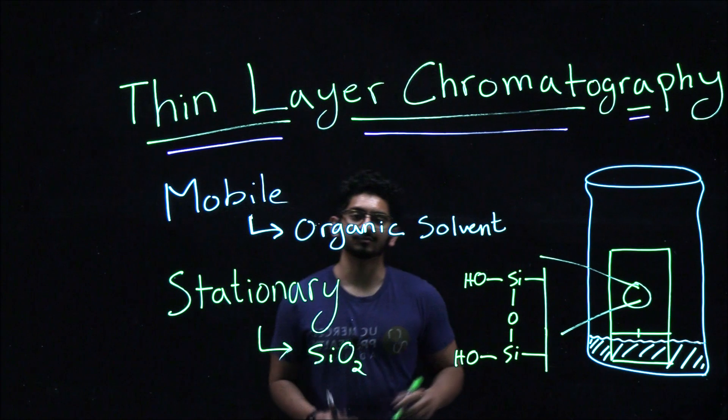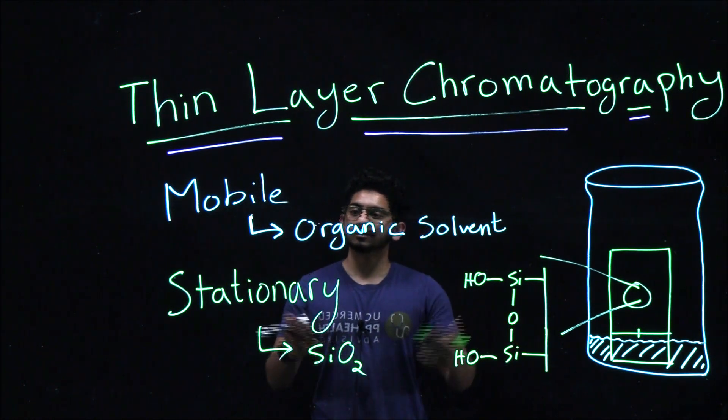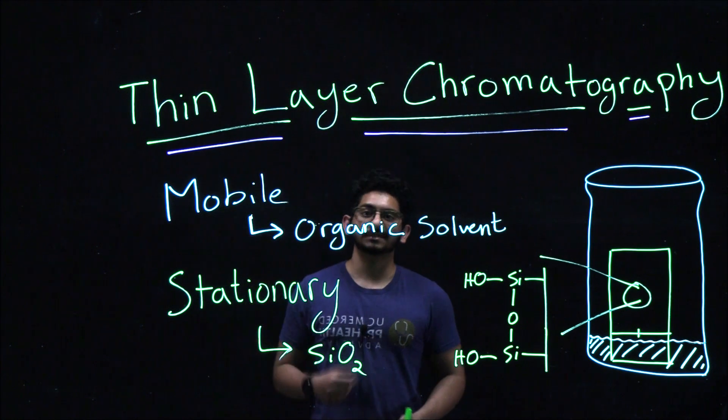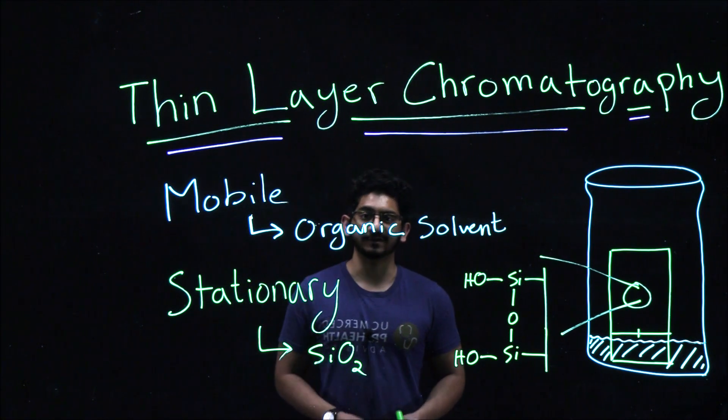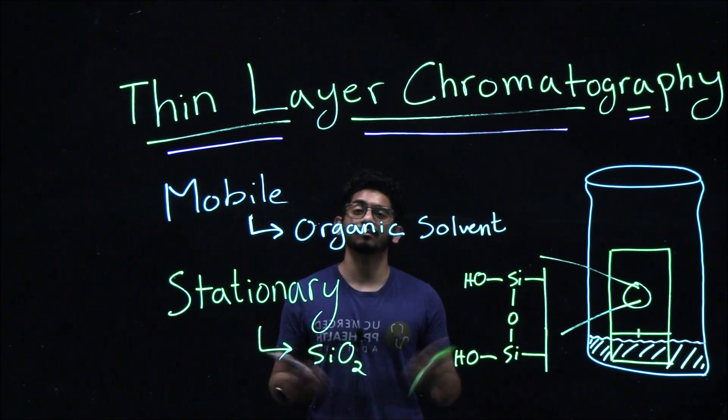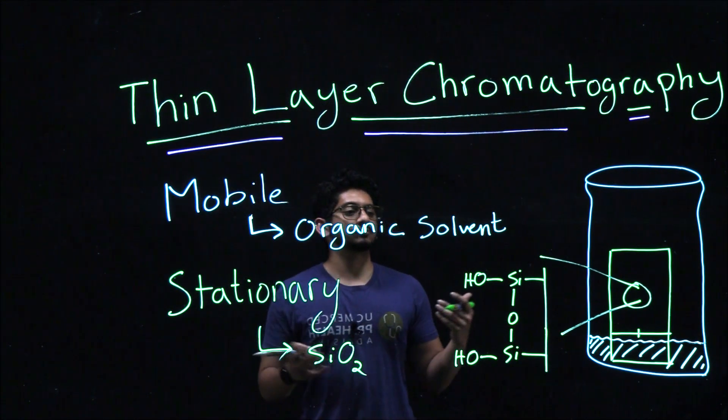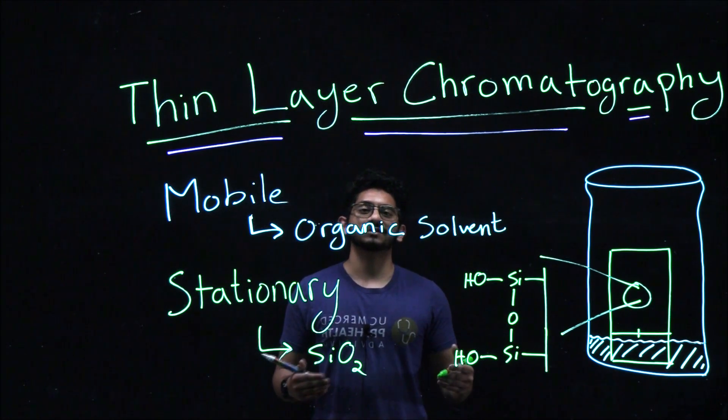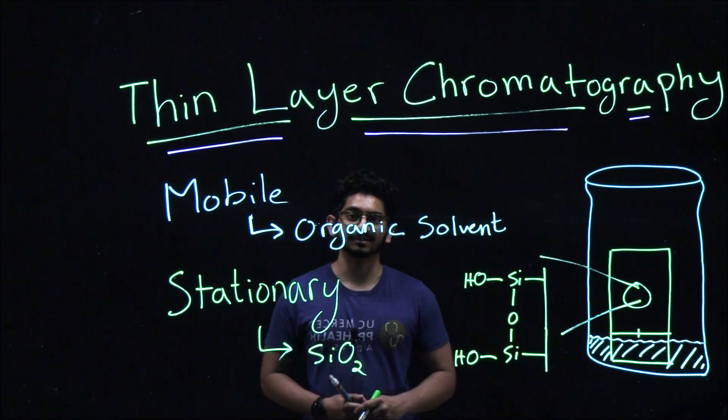Because of these OH groups on the surface of your silica, your stationary phase is considered the polar phase. Now the mobile phase is going to be your nonpolar phase. Like the organic solvents I mentioned, DCM and hexanes, they are generally nonpolar solvents. You would differentiate the mixtures of organic solvents in order to have different separations on your TLC plates.